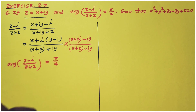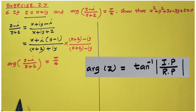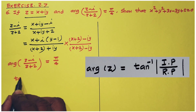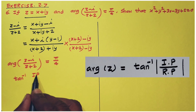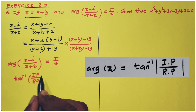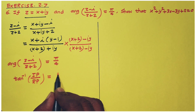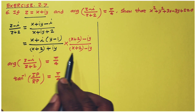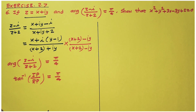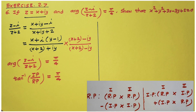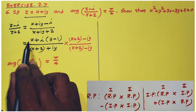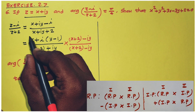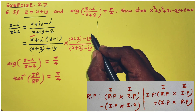We know that the argument can be defined as tan inverse of imaginary part divided by real part, and that equals pi by 4. So we separate the real and imaginary parts. For the multiplication: the first term is real, the second term is imaginary.